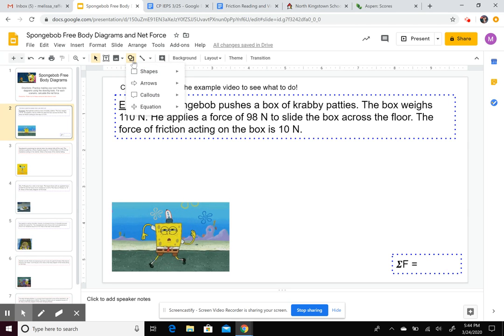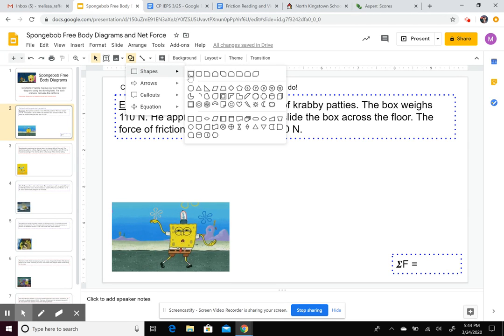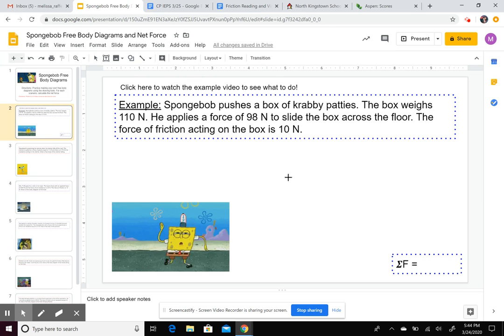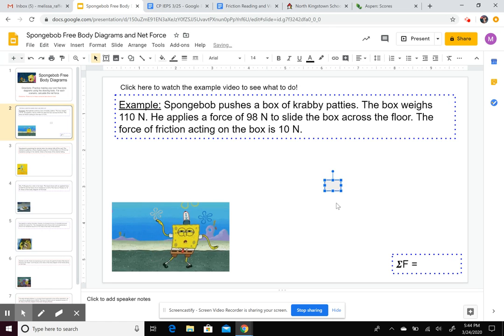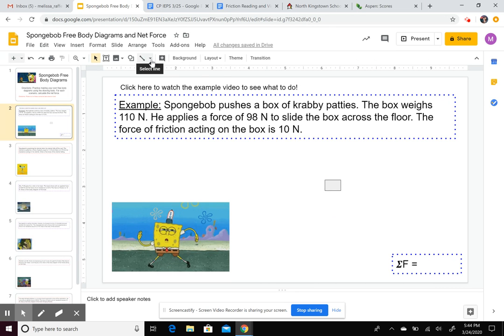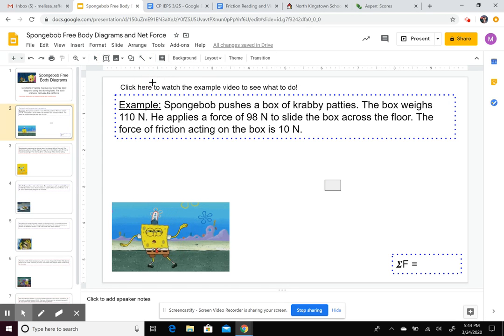So you're going to use the shapes to start off here. Free body diagrams sometimes start with just a dot to represent the object, or you could use a box like this. Okay, so there's my box of Krabby Patties. I'm going to use an arrow to show the forces acting on this box.